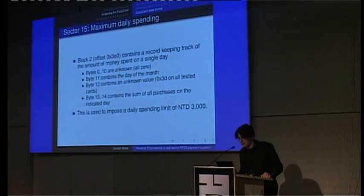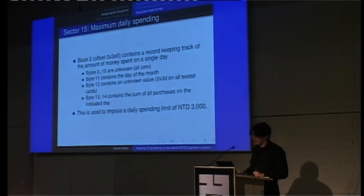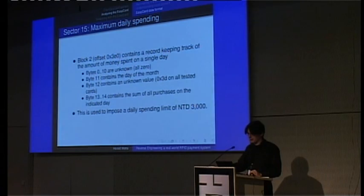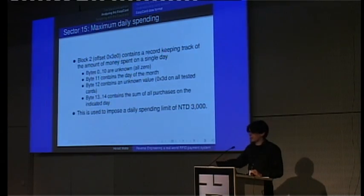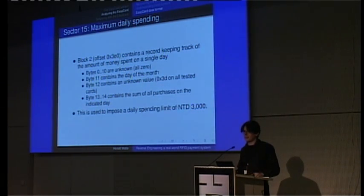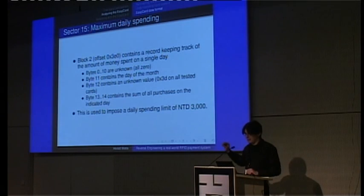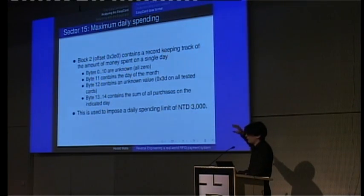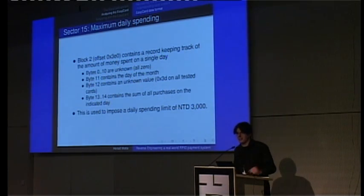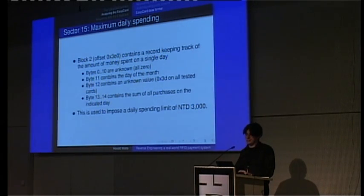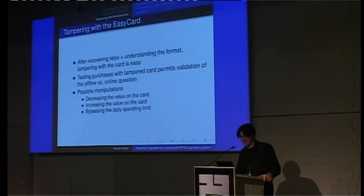In sector 15, block 2 at offset 0x3E0, there's a record containing the amount of money spent on a given day of the month — it stores the day of the month and the cumulative spending. This is checked in all transactions, and if that value reaches 3,000 NT dollars, the card is refused for any further transactions as long as the day of the month is the same. Using this check, if you were to wait until the same day of the month next month, you might still not be able to use the card — though I'm not entirely sure and wasn't there long enough to validate it.